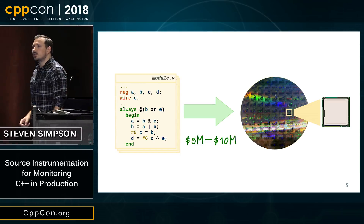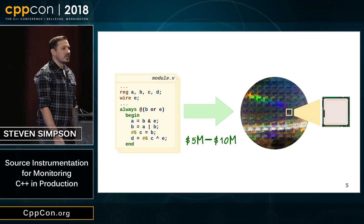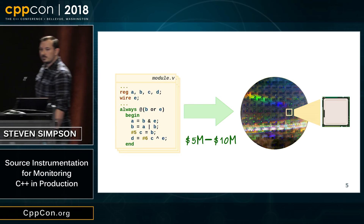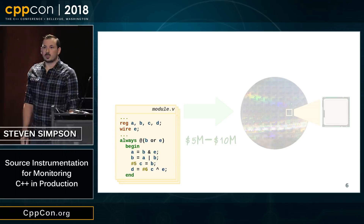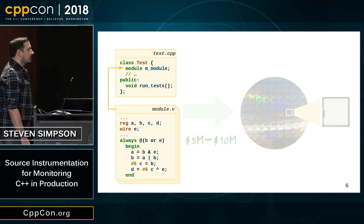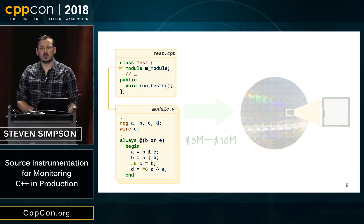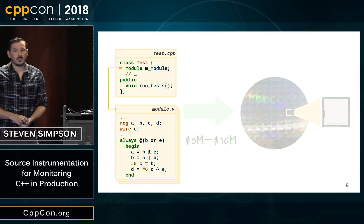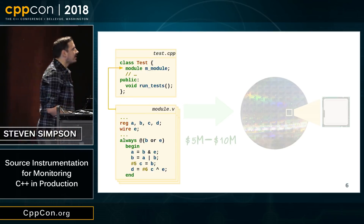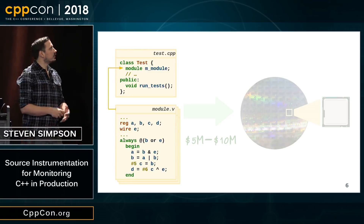This process is extremely expensive. A conservative estimate might put it at five or ten million dollars, and that's really being conservative about it. So this is where my job came in. My job, as it turned out, was to write tests for these designs in C++, because you want to get the design right first time. That rarely happens, but that's the idea. We would incorporate simulations of these designs into C++ code and write tests for them.